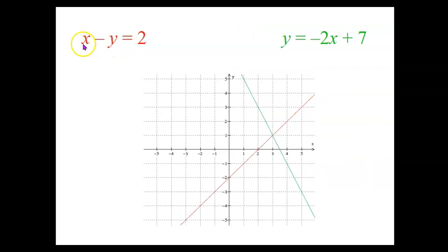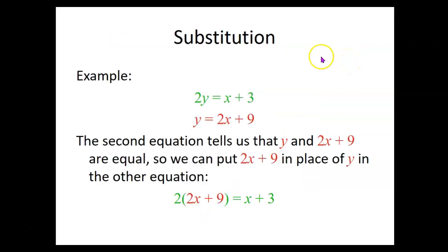What about the system x minus y equals 2 and y equals negative 2x plus 7? Well, each of these equations has a graph that is a straight line. And if we look for the one point where those two lines cross, the one point they have in common, the coordinates of that point are 3, 1. So that should be the solution to the two equations. They should both be true when x is 3 and y is 1. 3 minus 1 equals 2. 1 equals negative 2 times 3 plus 7.